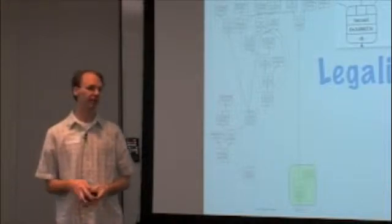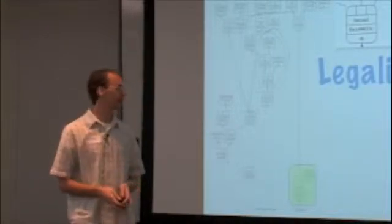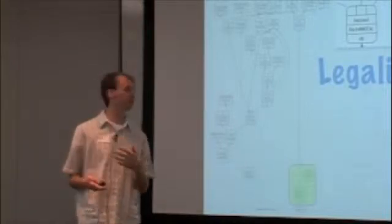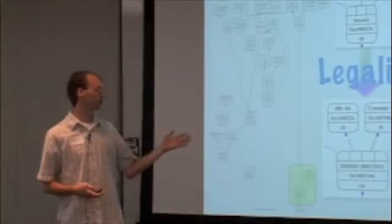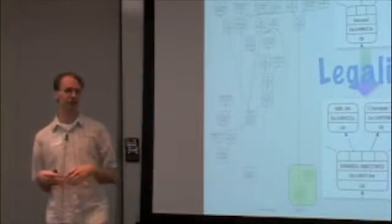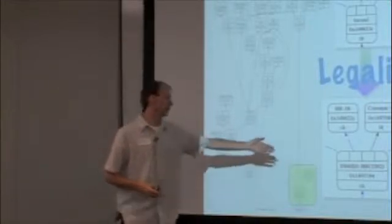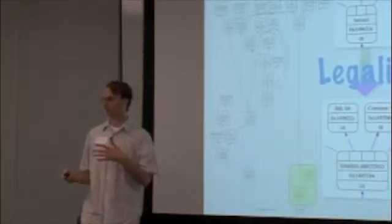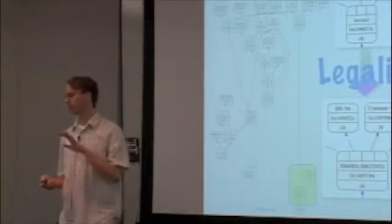Legalize is heavily parameterized by the target, by individual target nodes. In addition to targets being able to specify custom behavior, they could actually have custom nodes. So here we have a conditional branch being legalized for x86 using a special x86-specific node type. Targets can define any number of their own node types to aid in legalization.